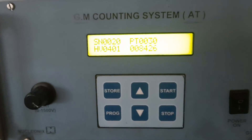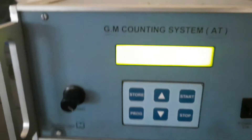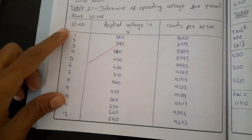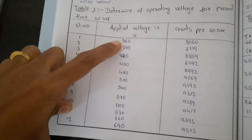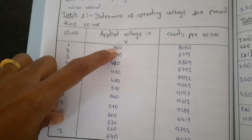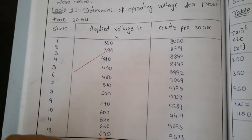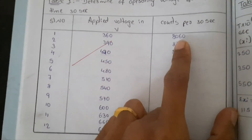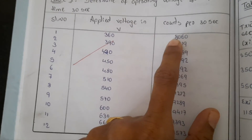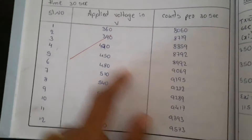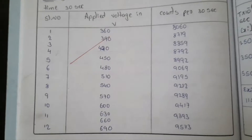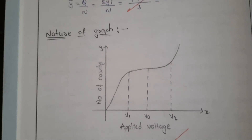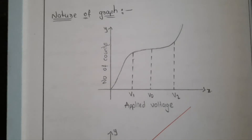You can see here they have also got readings starting from 360 volts, up to 690 volts, taking readings for 30 seconds each time and noting how many counts they got for each particular voltage. After taking all the readings, you have to plot a graph of applied voltage versus number of counts. This is the nature of the graph — let me show you how it looks.